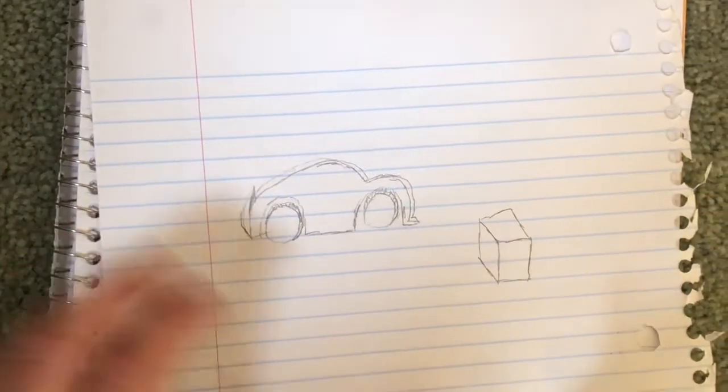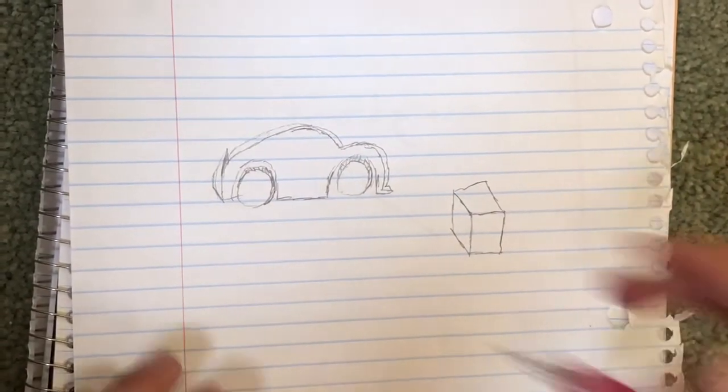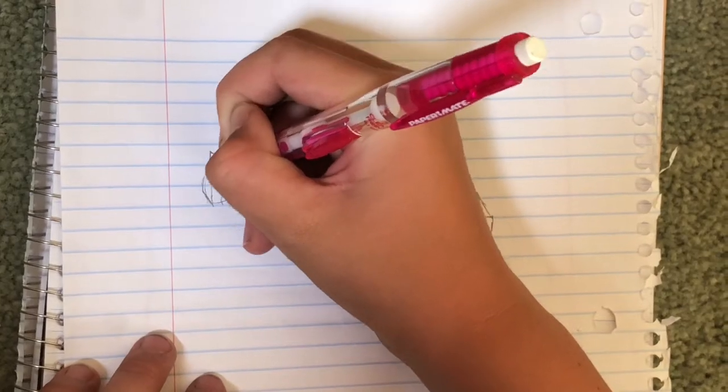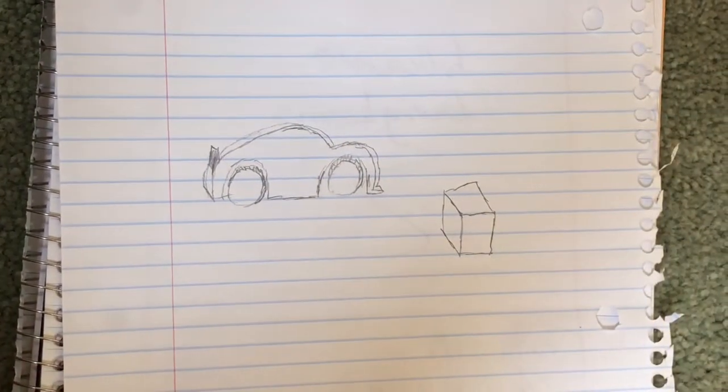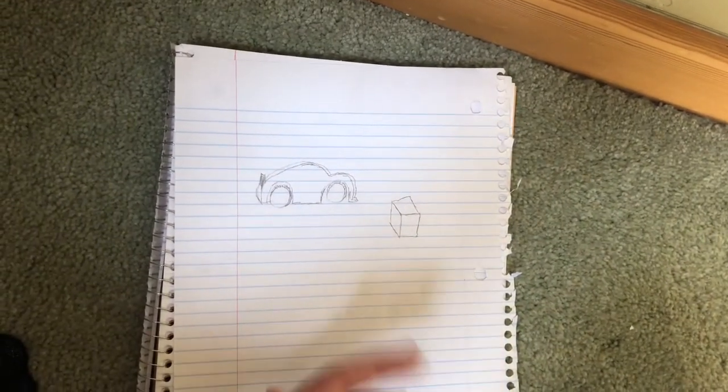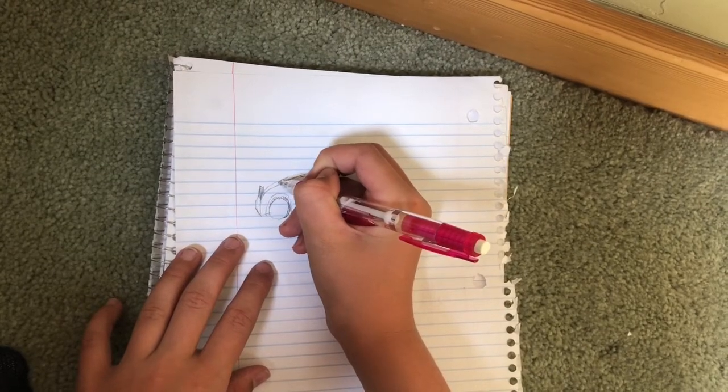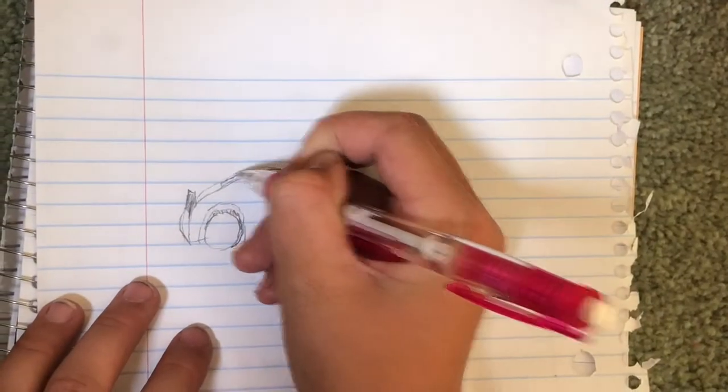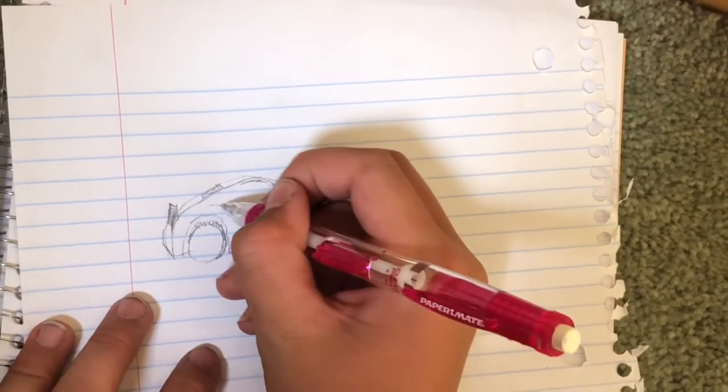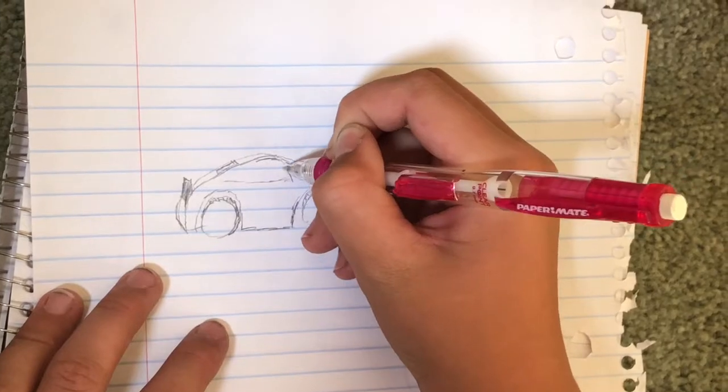And then next, you guys can now... the car part is done. So the car part of this car is done. Now you guys can really start adding some fun details. So like, I'll put a window in the back here and then a window right here.